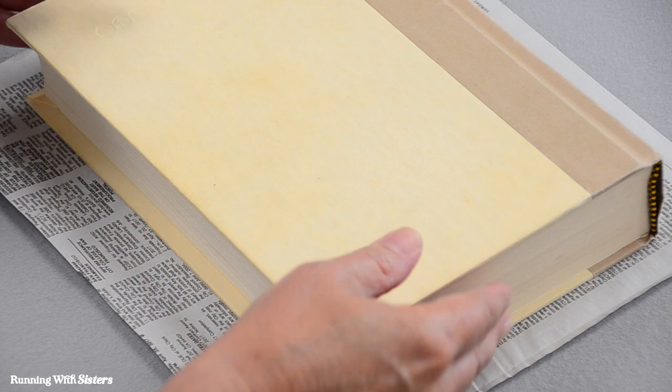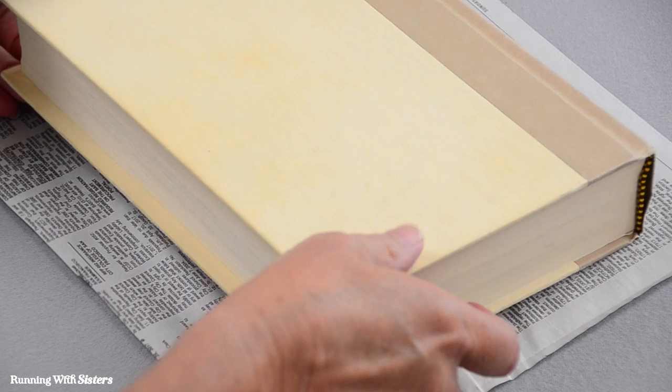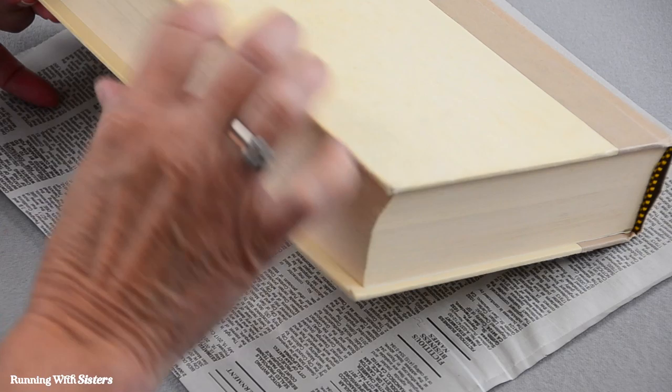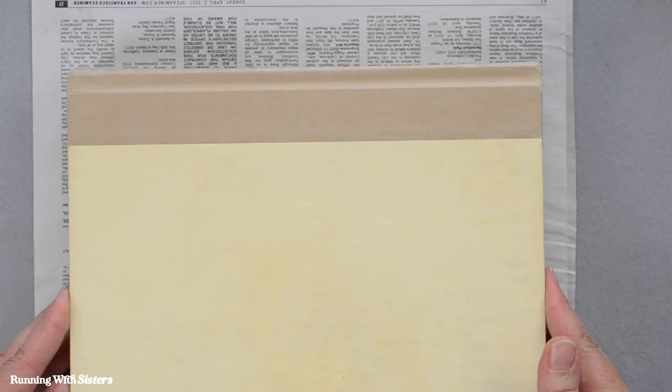To hollow out a book to make it into a box, the first thing you need to do is get a book. We just got this one at the thrift store. One of the key things you want to make sure is that it's fairly thick. If you want it to be a box, you'll want it to be deep enough to put things in.